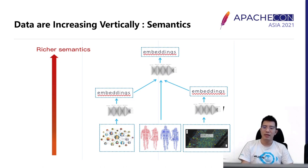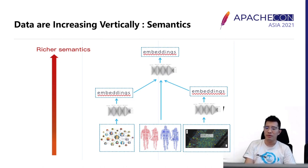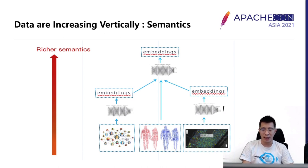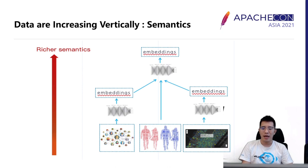Even for the same dataset, embeddings could be totally different based on what information we are extracting. For example, a video can be used for either object classification or anomaly detection. The embeddings will be totally different, and different embeddings should be generated for different purposes.